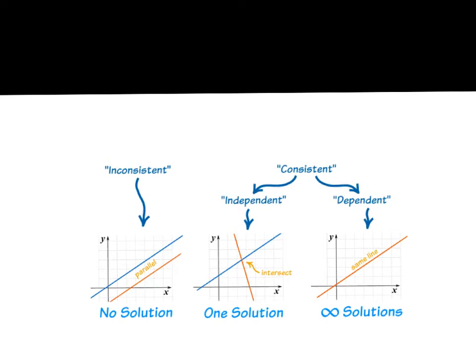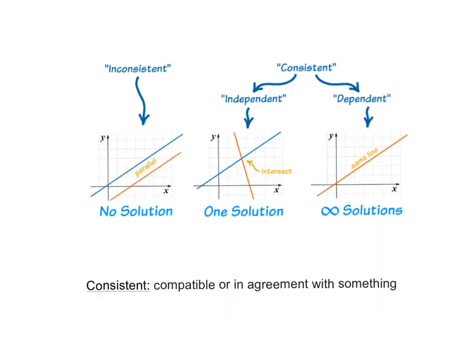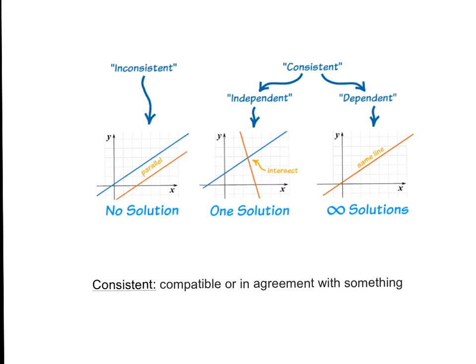First, we have inconsistent and consistent. A system is consistent if it has at least one solution, so it can either have one solution or infinitely many solutions. A system is inconsistent if it has no solutions. To remember this, think about what the definition of consistent means. Compatible or in agreement with something.